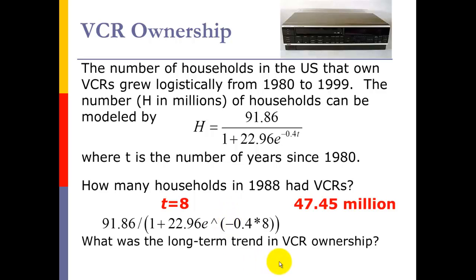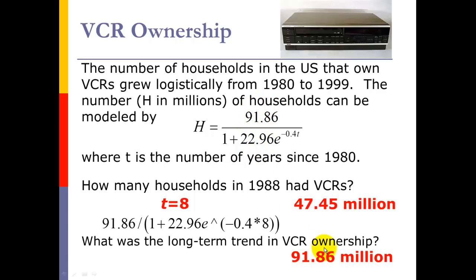The next question is: what's the long-term trend for VCR ownership? Hopefully you realize that VCRs are basically obsolete. Due to streaming, DVDs, and other things, these went out of style and the numbers sold leveled off. The long-term trend is represented by the number in the numerator. This 91.86 represents the long-term trend because a logistic model has a ceiling, and the number in the numerator is that ceiling.